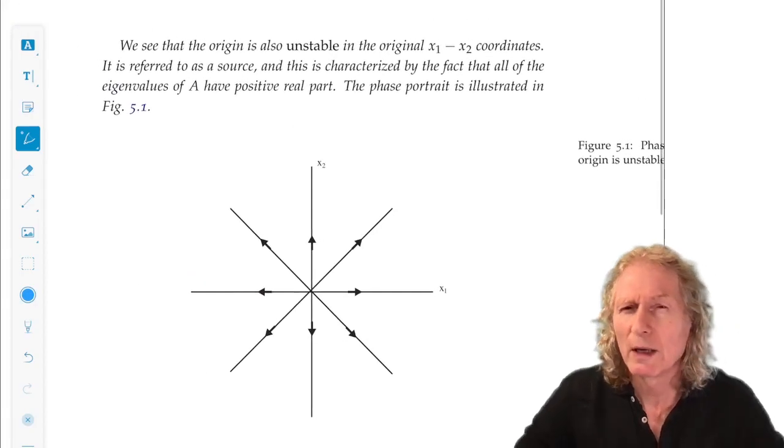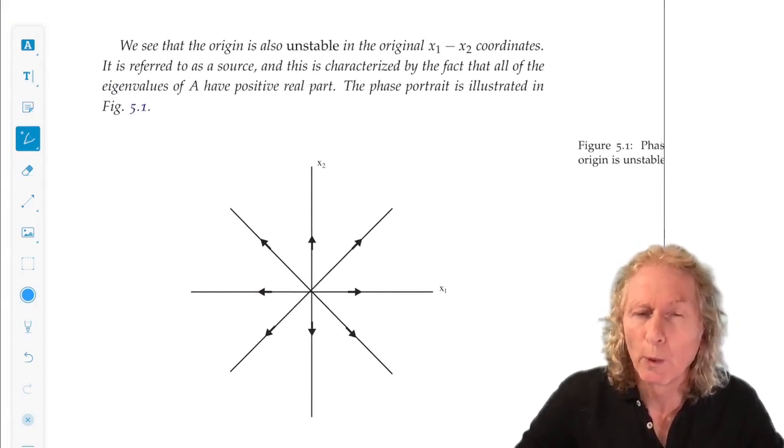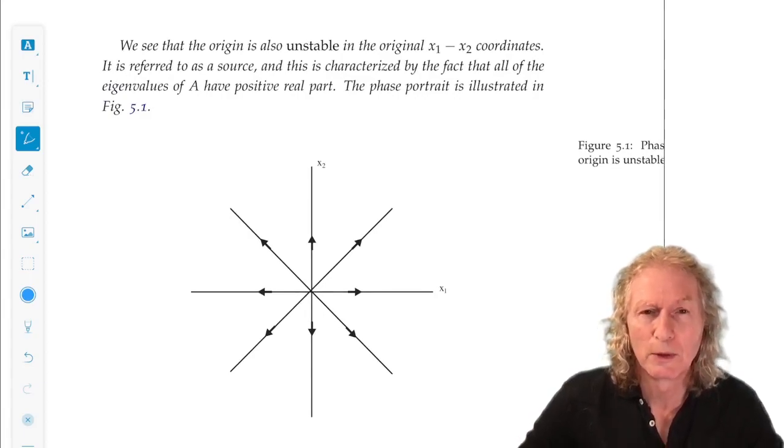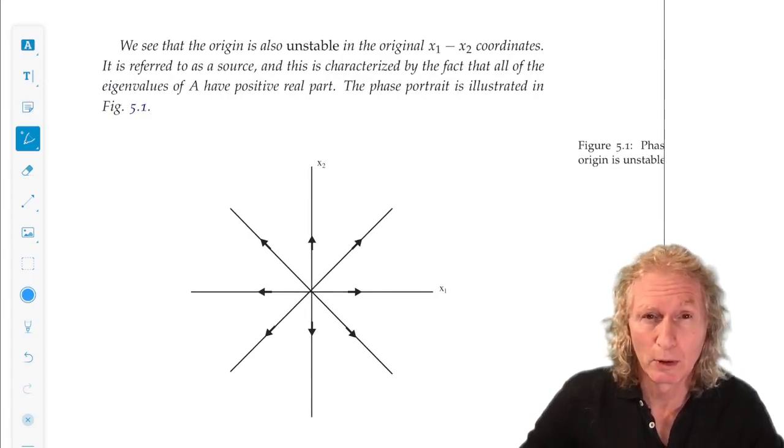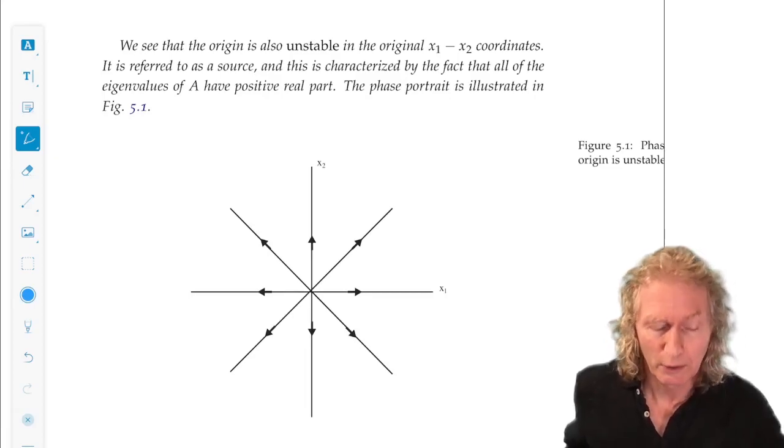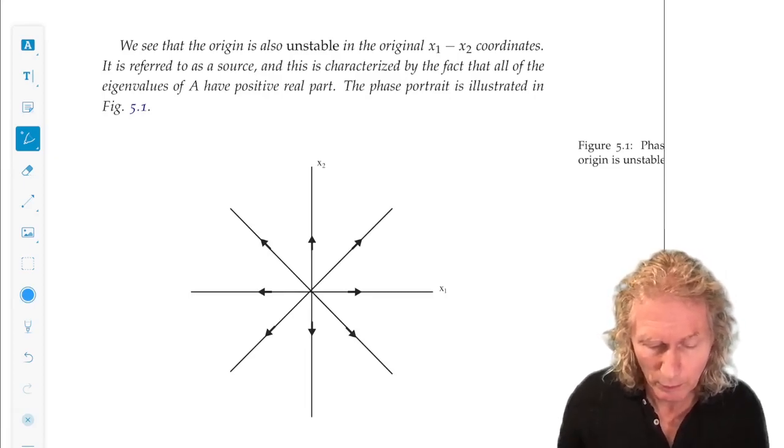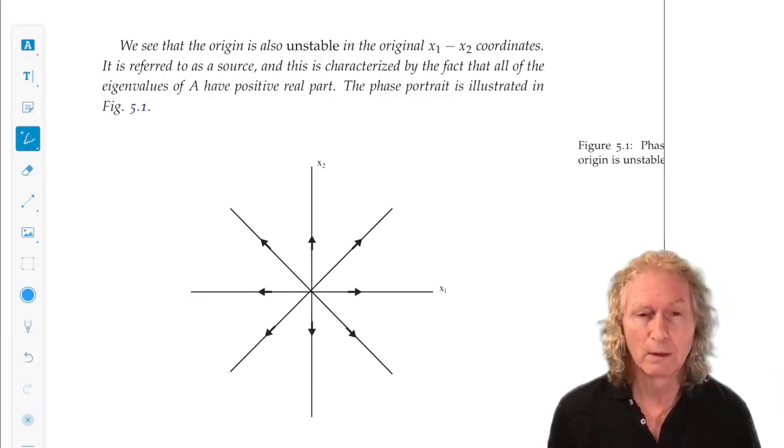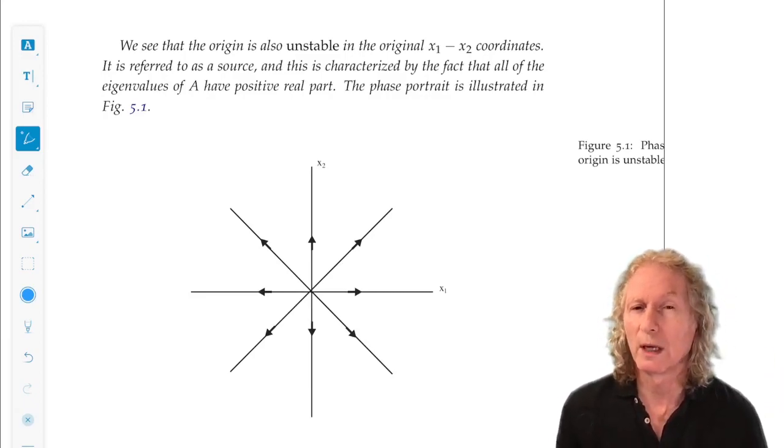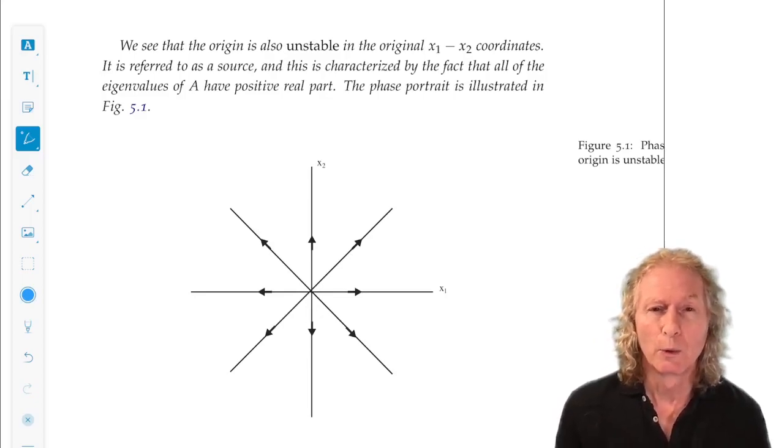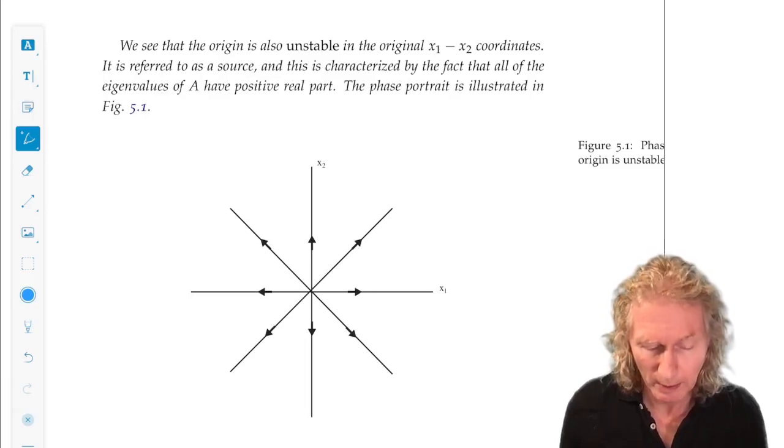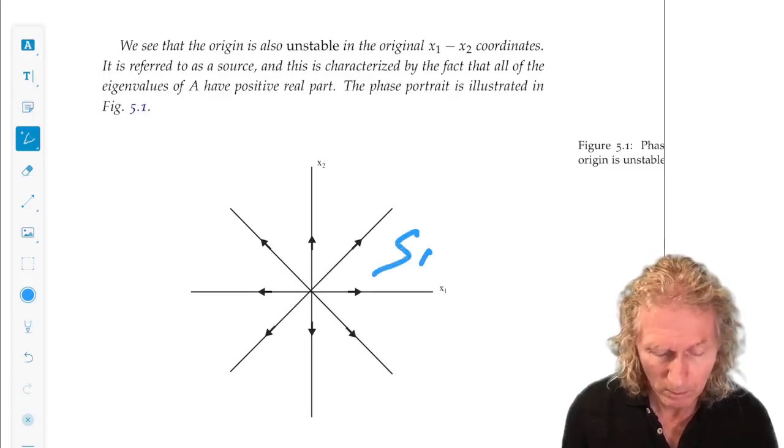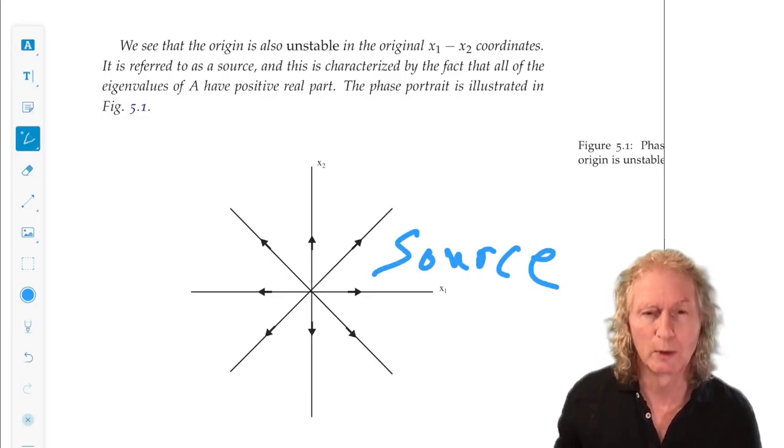So, the eigenvalues are both real, there's no imaginary part, and they're real and positive. We refer to an equilibrium point that's unstable in this way with the eigenvalues, the real part's positive as a source, and we'll come back to that later on. It's terminology.